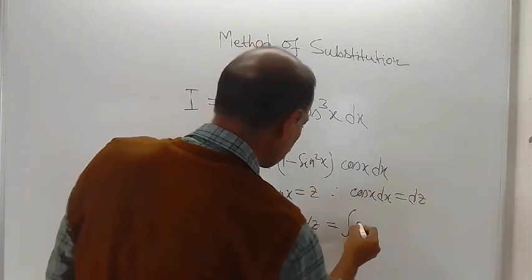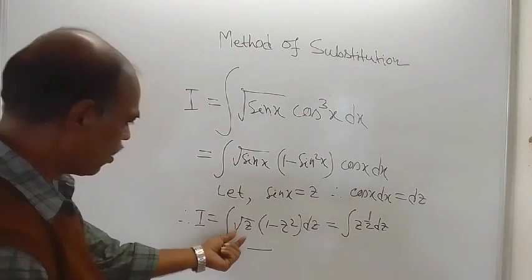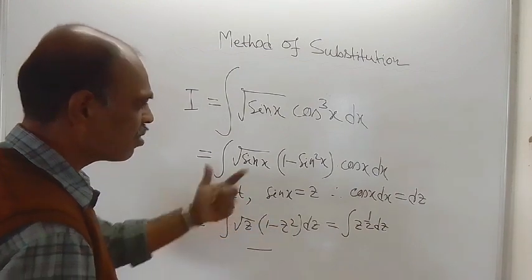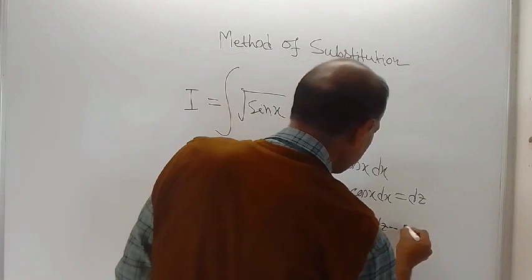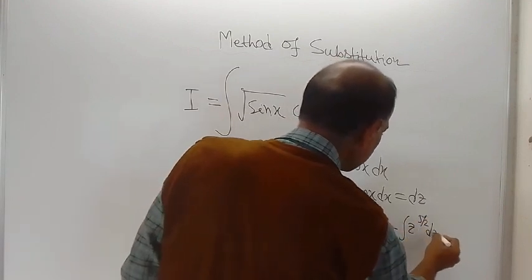And this is equal to integration of z to the power half dz, root z dz, minus z square into root z. That is z to the power 5 by 2 dz.